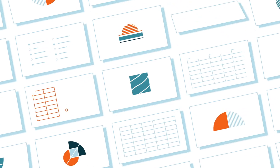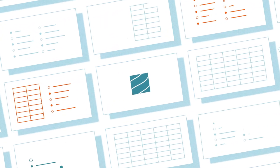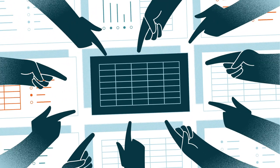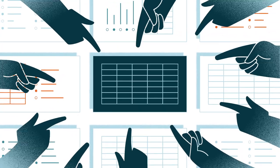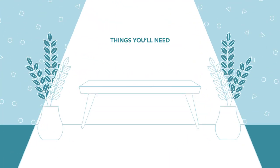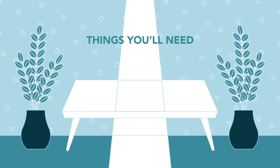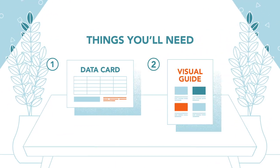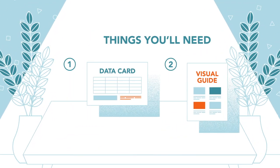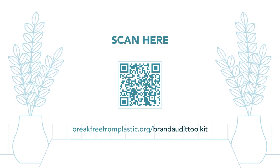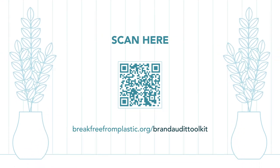By documenting the brands found on plastic waste, you will help identify the companies responsible for plastic pollution. To get started, you will need a printed copy of our Brand Audit Data Card and Visual Guide, available on the Brand Audit website. Ready? Let's do this!